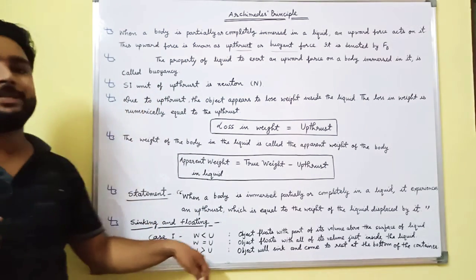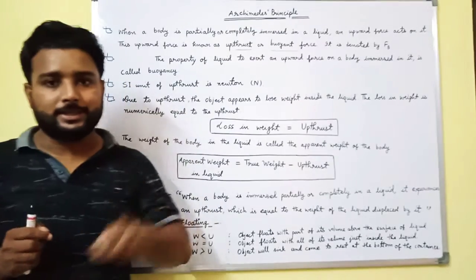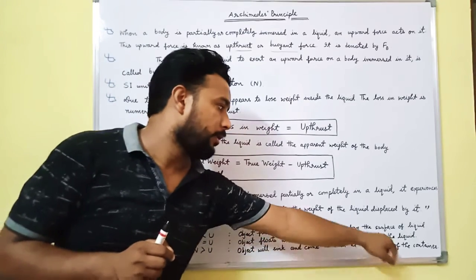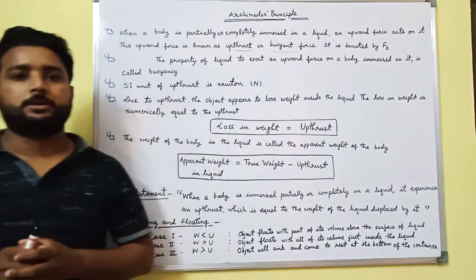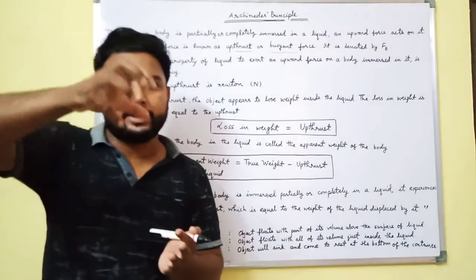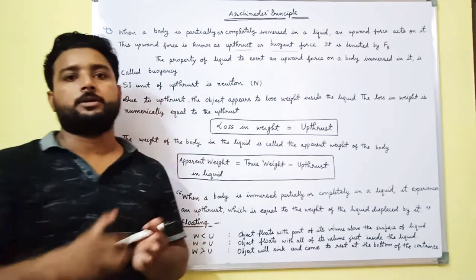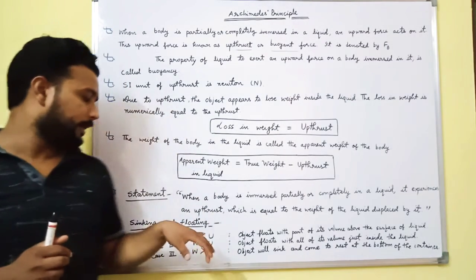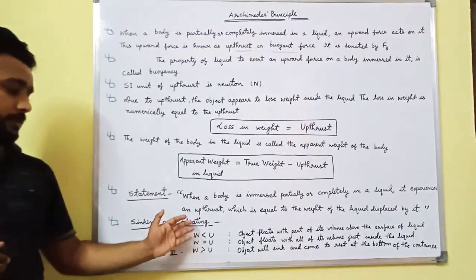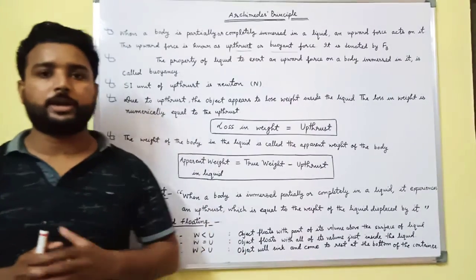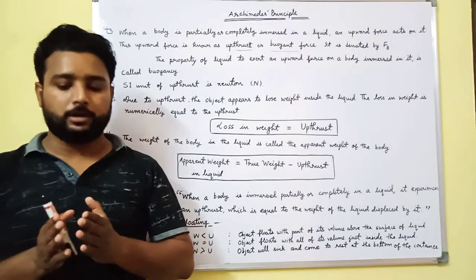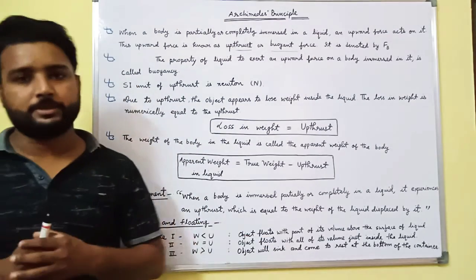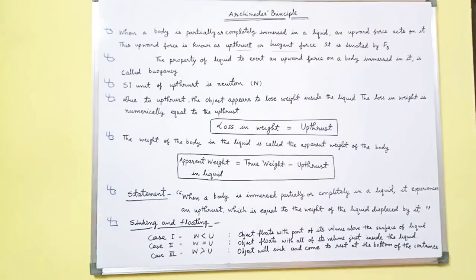When the weight of the body is greater than the thrust, the object will sink and come to rest at the bottom of the container. So there are three conclusions: weight less than thrust — floats partially above; weight equal to thrust — floats just submerged; weight greater than thrust — sinks to the bottom. Thank you.